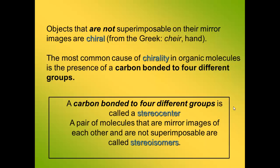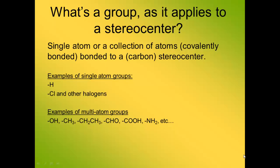The most common cause of chirality in organic molecules is the presence of a carbon bonded to four different groups. A carbon bonded to four different groups is called the stereocenter. A pair of molecules that are mirror images of each other and are not superimposable are called stereoisomers. I'd like to further explain what a group is and how it applies to a stereocenter.